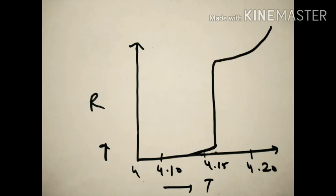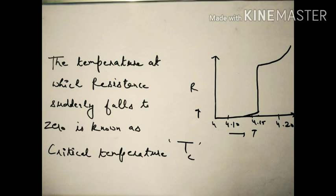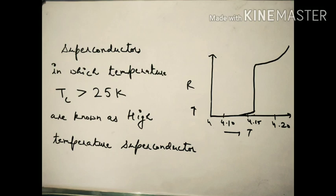So if we plot a graph of resistance versus temperature, as we decrease the temperature from around 4.2K, a point comes where the resistance drops completely to zero. What do we call that temperature? Critical temperature — the temperature at which resistance suddenly falls to zero is known as the critical temperature.